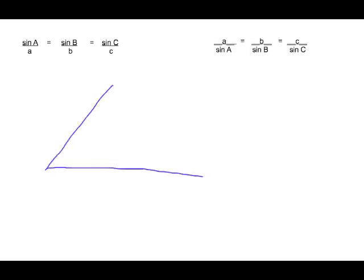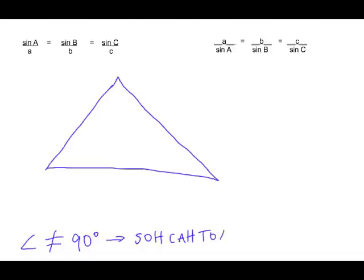But what's important to know is we are using triangles that are not at a 90 degree angle. So none of the angles are equal to 90 degrees, because if they are equal to 90 degrees, then what we're going to be doing is we're going to be using what we call SOHCAHTOA.